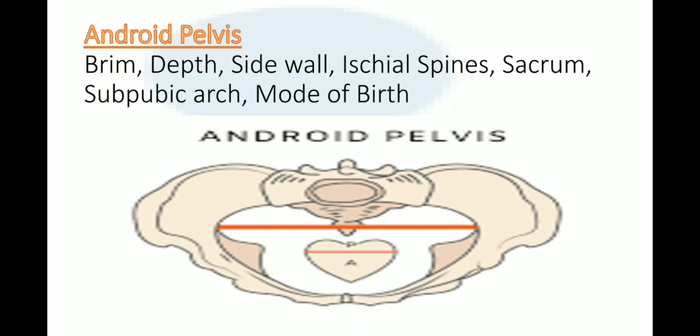In android pelvis, the sidewalls are convergent — in gynecoid they were straight, but here they are convergent. The ischial spines are prominent with a narrow interspinous diameter, whereas they were blunt in gynecoid. The sacrum is slightly curved and the terminal portion is often peaked. The subpubic arch is narrow. The usual mode of delivery is cesarean, as vaginal delivery is difficult; forceps delivery is also difficult.